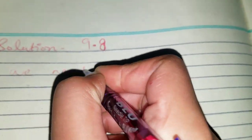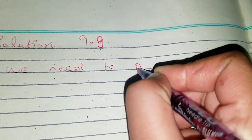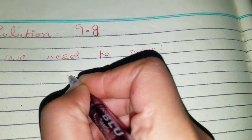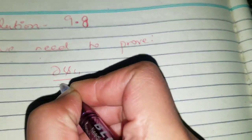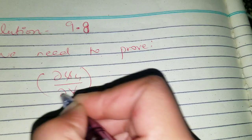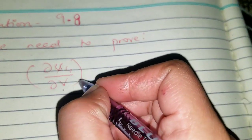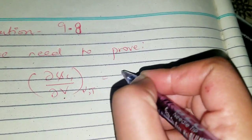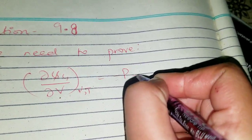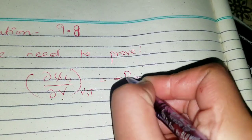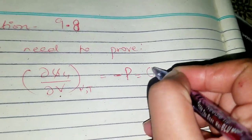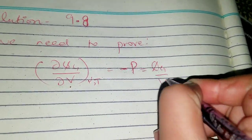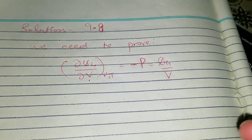We need to prove that the partial derivative of Ψg with respect to V equals minus p. Ψg is the grand potential. We also name this as Ψg/V equals minus p. We need to prove that relation.